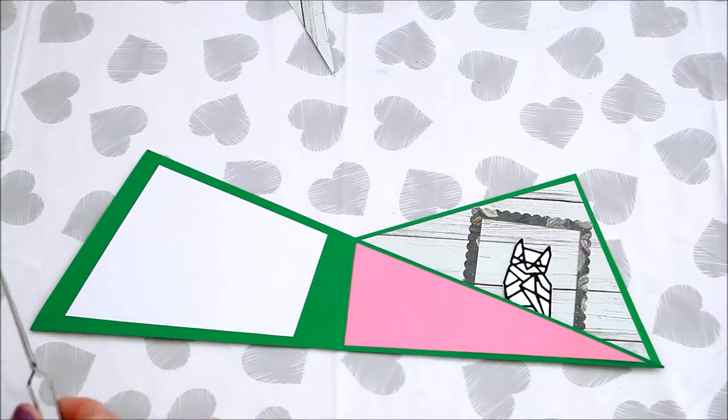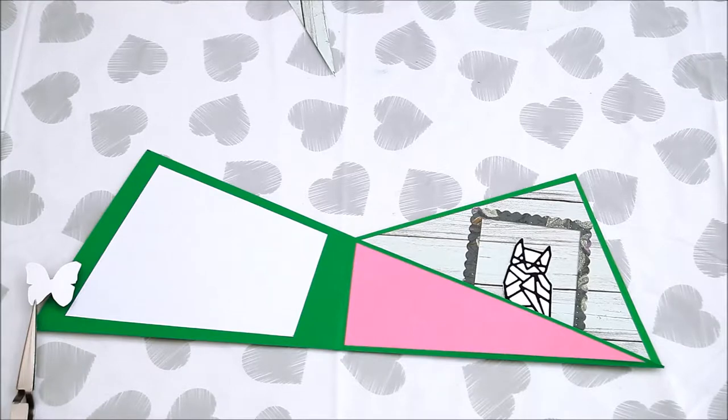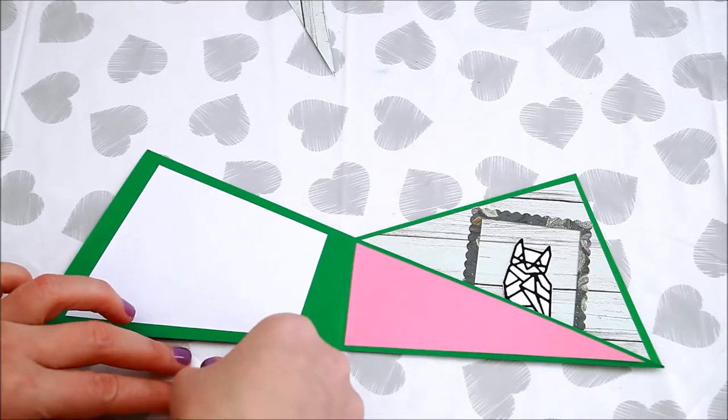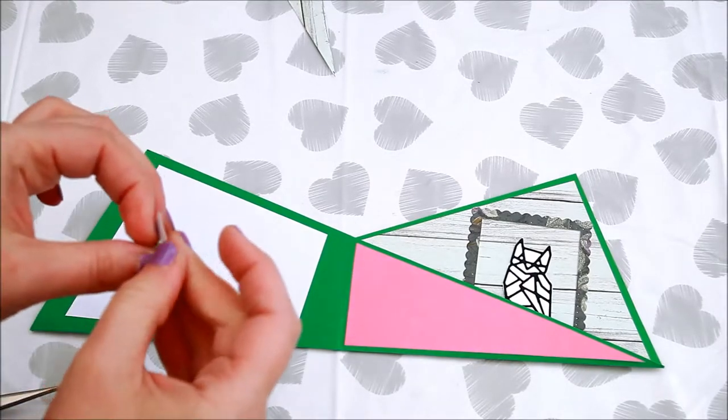To finish the picture I added a fussy cut butterfly from the first edition Mariposa paper pad and affixed it with foam tape to add a bit of dimension.